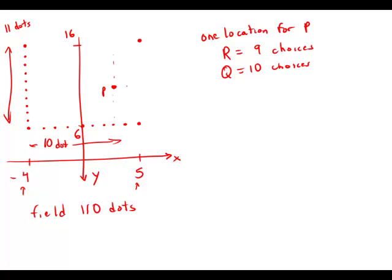And so that means any one location for P, we have 90 choices for a possible triangle. And that's for one P.